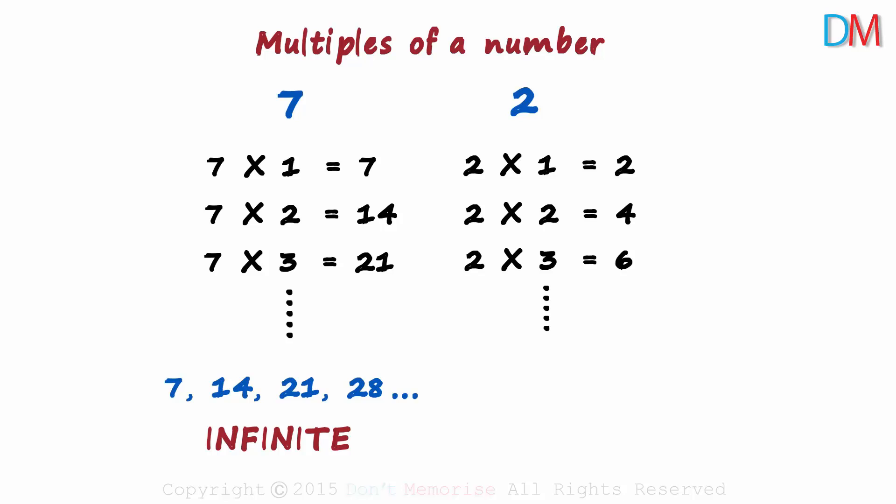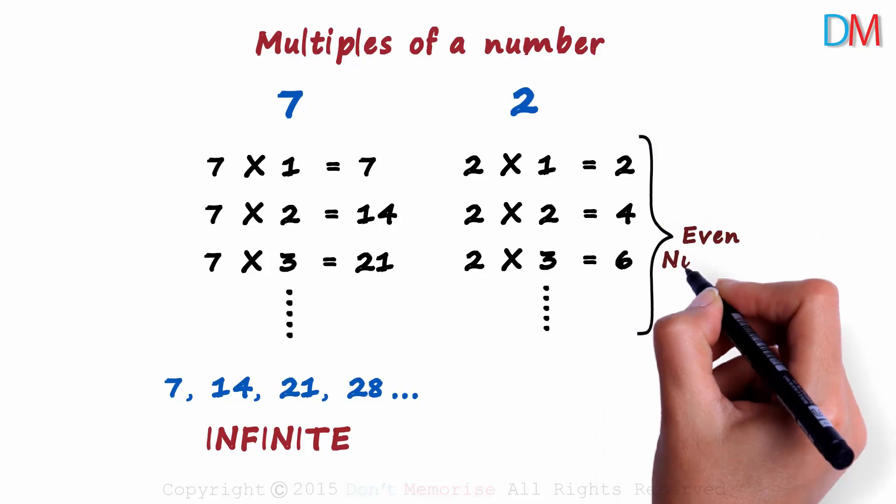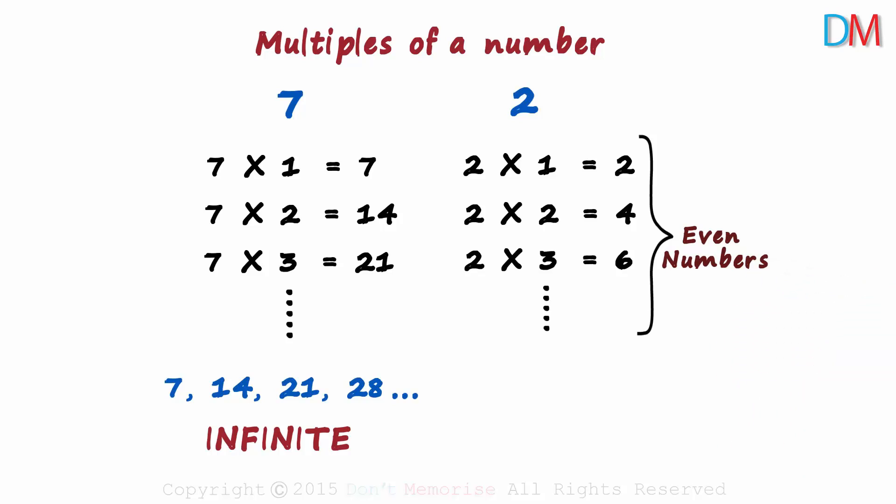What's special about the multiples of 2? All the multiples of 2 are called even numbers. Yes, all the multiples of 2 are even. And what about the numbers which are not multiples of 2? The numbers which are not multiples of 2 are called odd numbers.